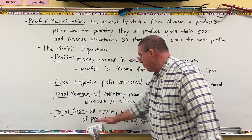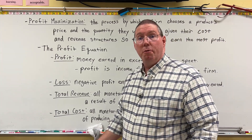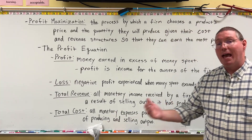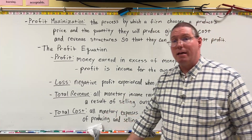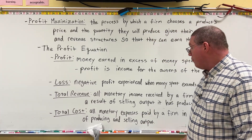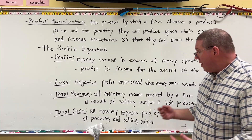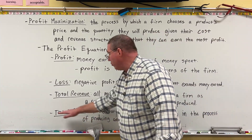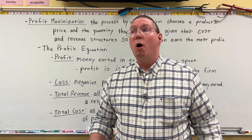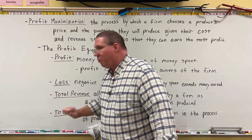Firms produce and sell output. In order to produce and sell output, they have to pay for factors of production — paying for land, labor, and capital. If we add up all of the money spent to get their land, labor, and capital, that total amount is called total cost. So now we're going to show the profit equation, which includes profit, total revenue, and total cost.